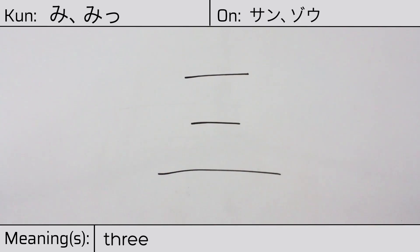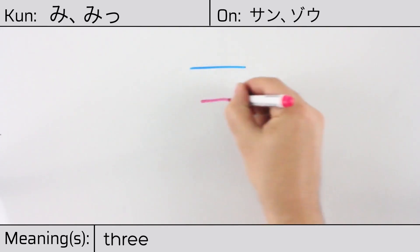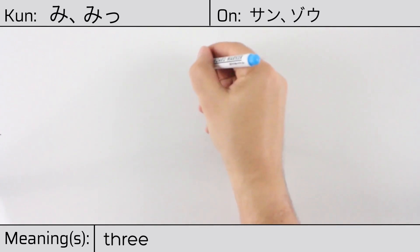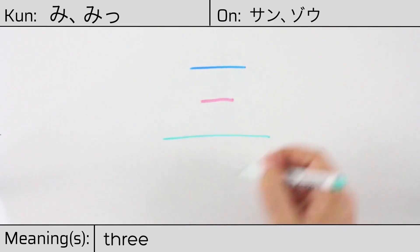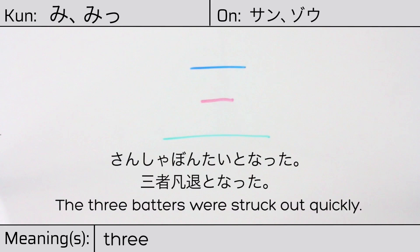This character is made up of the following radicals or parts: one horizontal stroke, which is repeated three times. You can remember this kanji by the fact that it is three lines, meaning three. Our example sentence is: San sha bontai to natta — The three batters were struck out quickly.